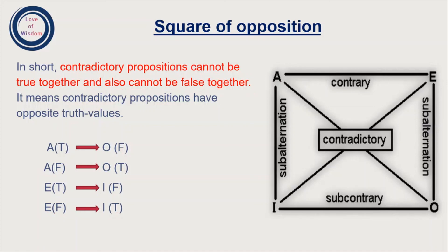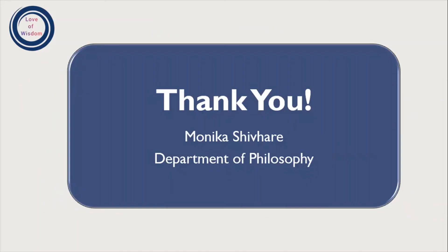So, we have covered three relationships: contrary relationship, subcontrary, and contradictory. I hope you understood them. The fourth relation is the subaltern relationship, which is slightly more complex and we will cover it in detail in the next video. That's all for today's video. Thank you.